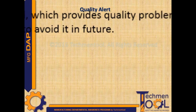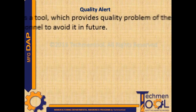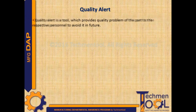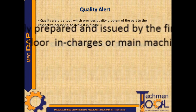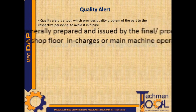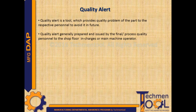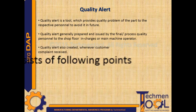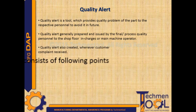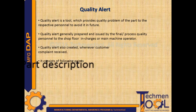Quality Alert is a tool which provides quality problem of the part to the respective personnel to avoid it in future. Quality Alert is generally prepared and issued by the final or process quality personnel to the shop floor in-charges, main machine setter, or operator. Quality Alert is also created whenever a customer complaint is received.